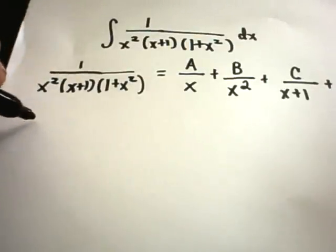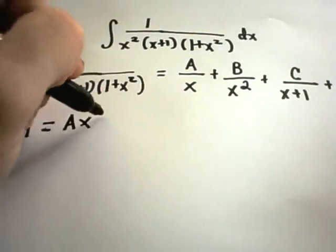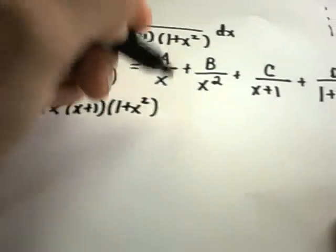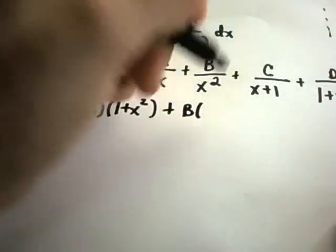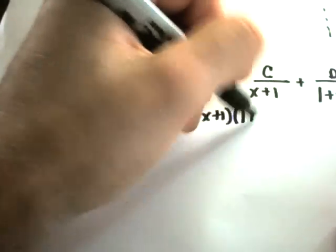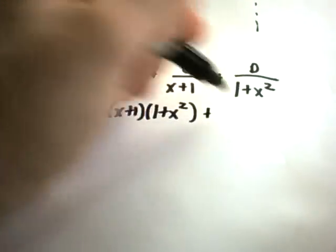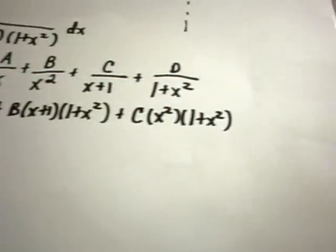On the left side that simply leaves us with just 1. On the right side we'll have a times x, times (x plus 1), times (1 plus x squared). For the b term, the x squareds cancel, leaving x plus 1 times 1 plus x squared. The x plus 1 terms cancel for c, leaving x squared times (1 plus x squared). And the 1 plus x squared terms cancel for d, leaving x squared times (x plus 1).